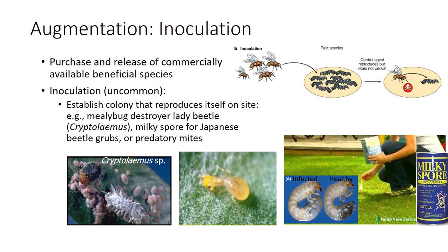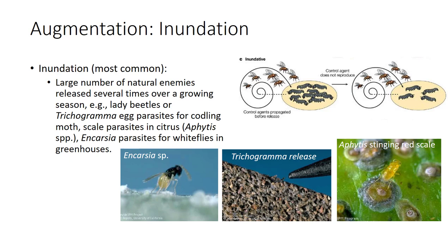Some examples include releasing mealybug destroyer or predatory mites in greenhouses, and inoculating turf with bacterial milky spore powder for grub control. Inundative releases are aimed at achieving immediate biological control through the activities of the released individuals. Offspring of released individuals are not expected to survive to assist in control. Additional releases may be required throughout the season should pest populations approach damaging levels.